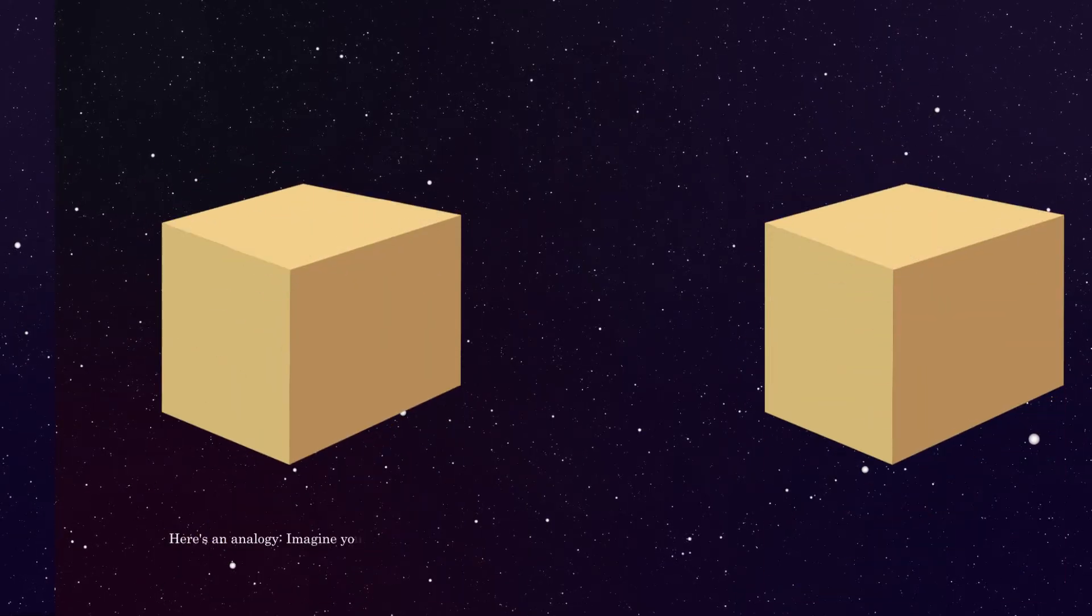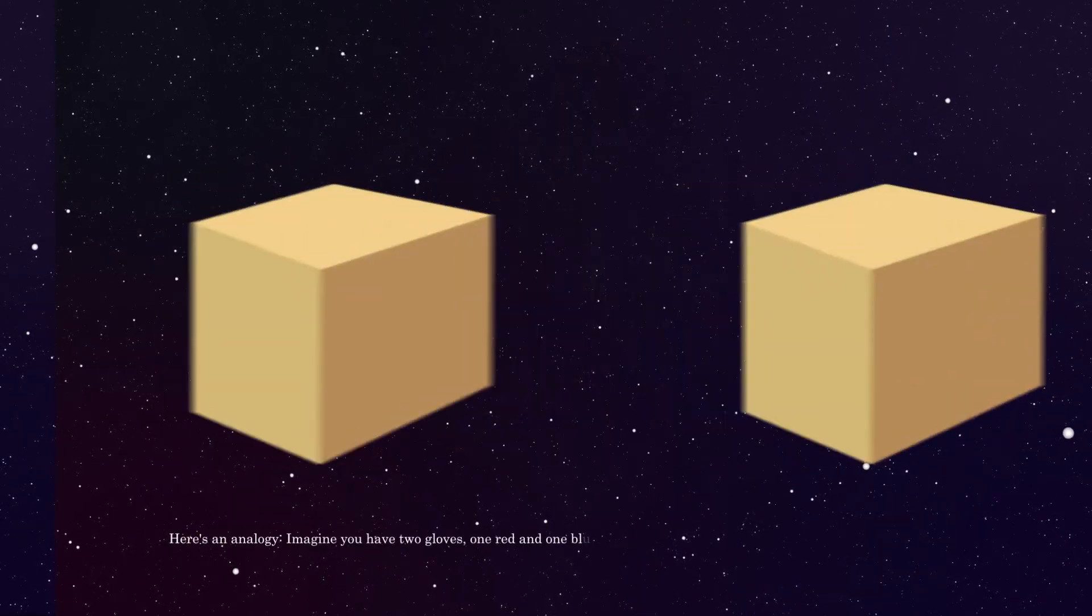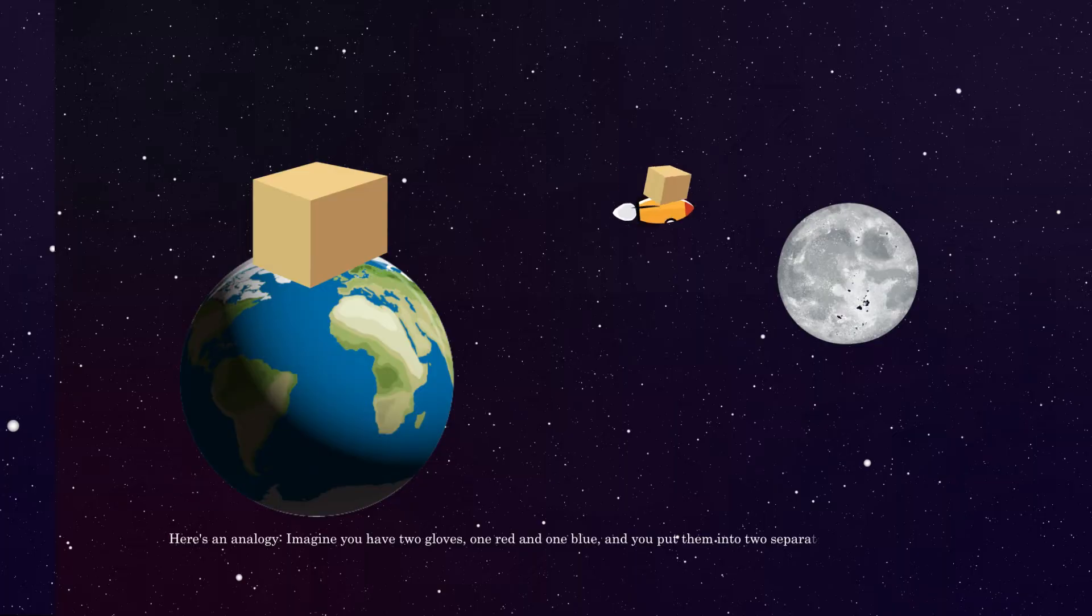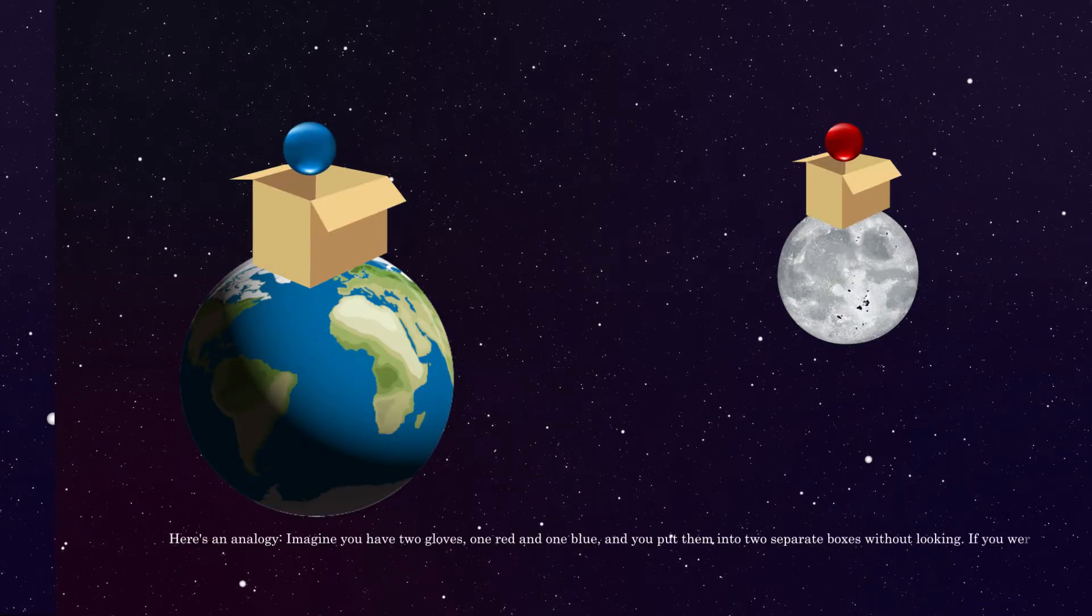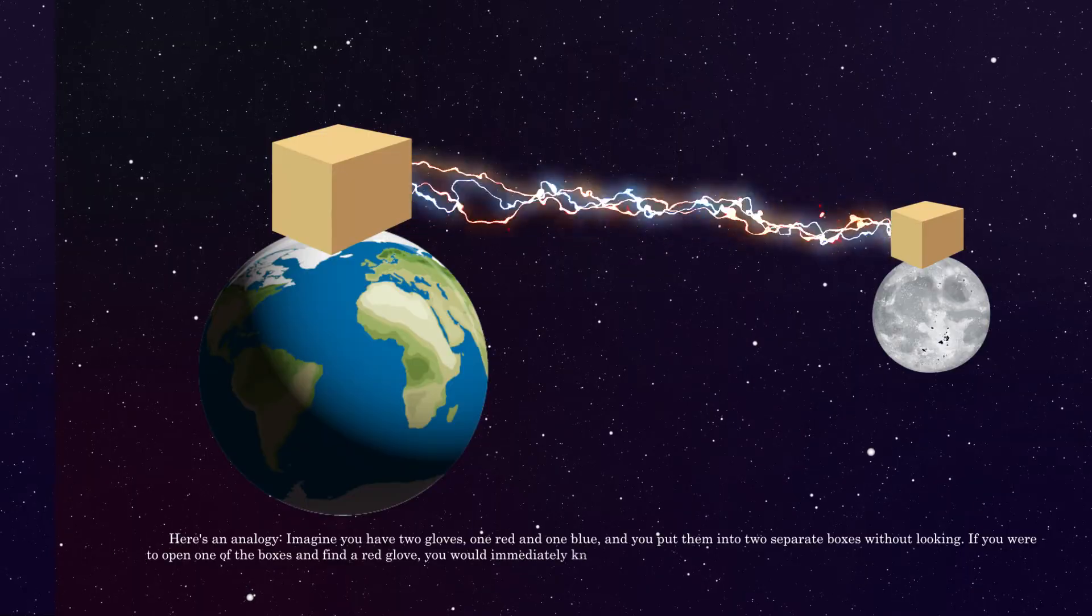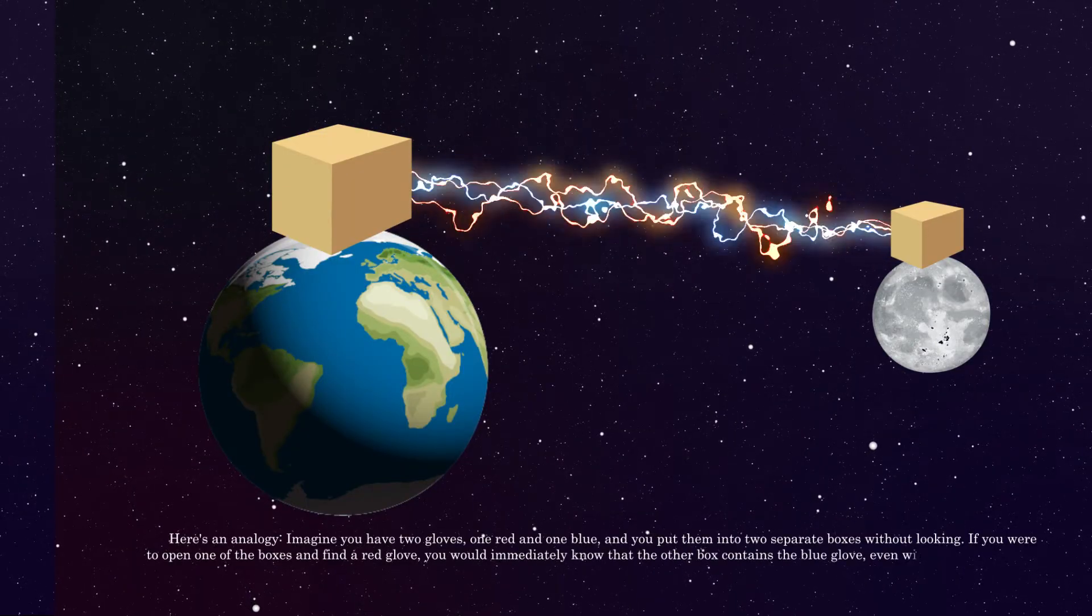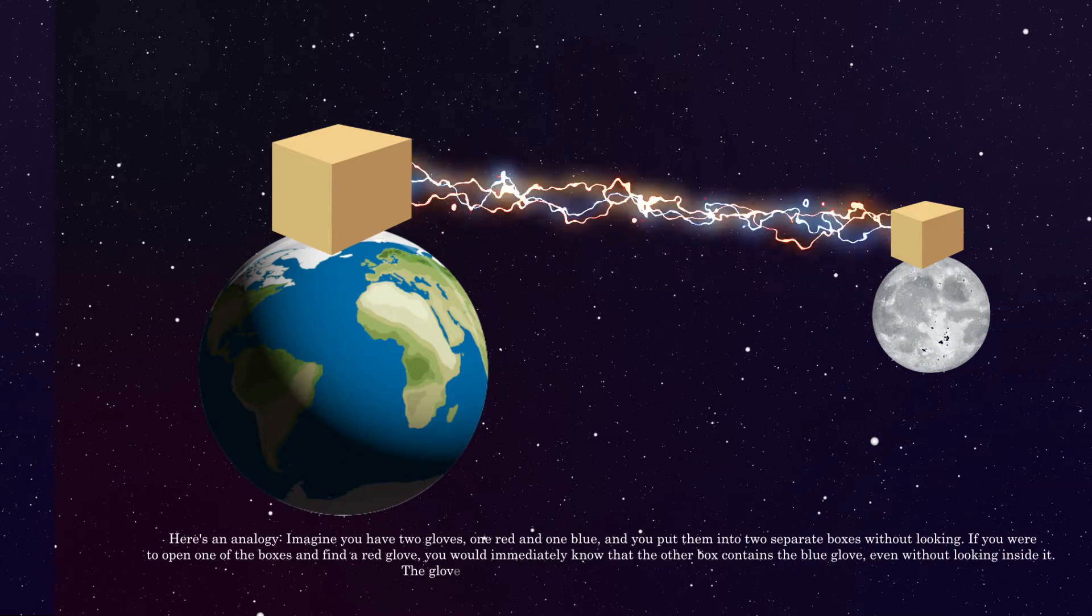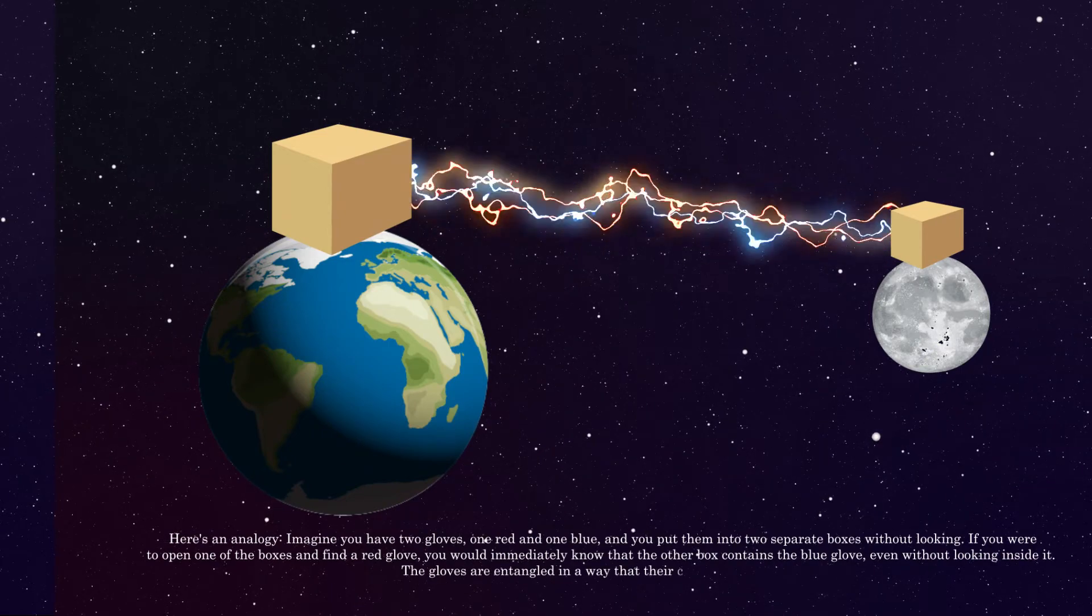Here's an analogy. Imagine you have two gloves, one red and one blue, and you put them into two separate boxes without looking. If you were to open one of the boxes and find a red glove, you would immediately know that the other box contains the blue glove, even without looking inside it. The gloves are entangled in a way that their colors are connected.